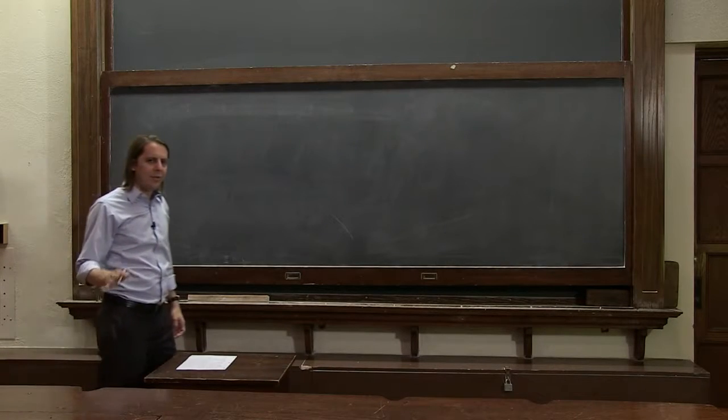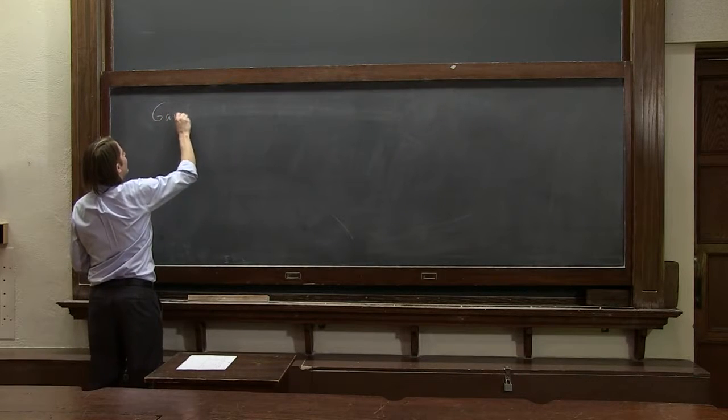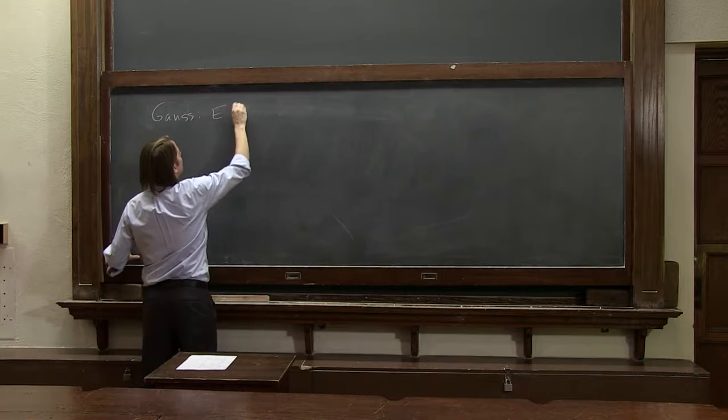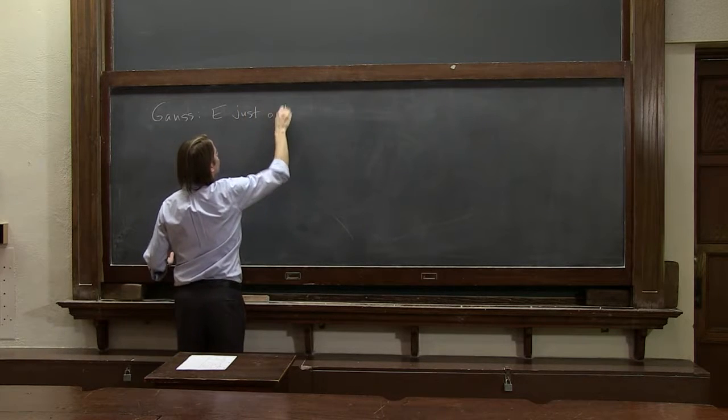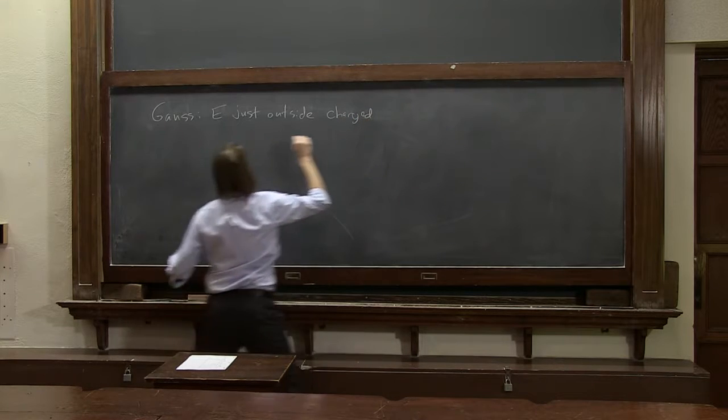So we know the E field right outside of a conductor has to be perpendicular. Let's see if we can figure out what the magnitude is. So this is E just outside a charged conductor.